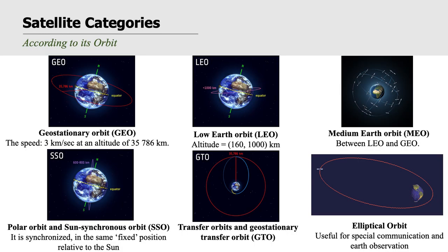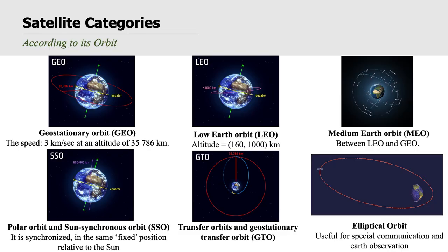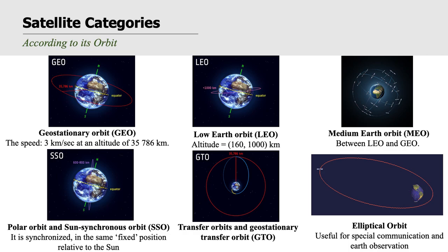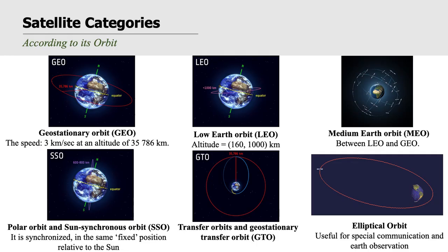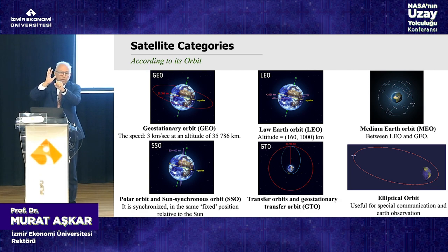Another concept related to satellites is the sun-synchronous orbit. When the satellite is turning around the Earth, we need energy, which is supplied by solar panels. So the solar panels should always be looking at the sun — satellites turning around the Earth while always facing the sun.